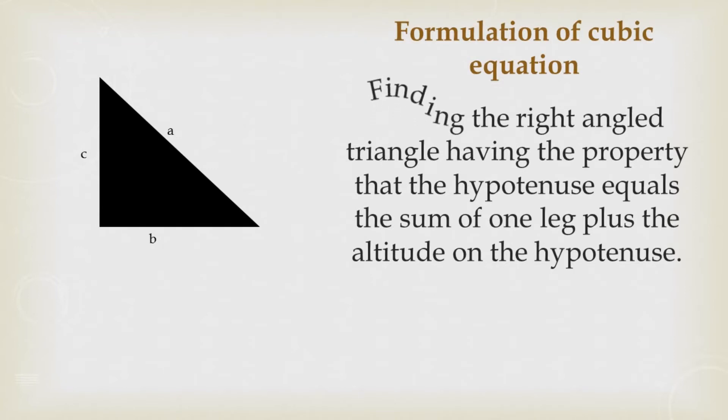If you are to find a right angle triangle that has this property, that the hypotenuse is equal to the sum of one leg, in this case it can be B, plus the altitude which is the height of the right angle triangle. When a right angle triangle has this property, A = B + C, this particular explanation was also conceived in solving the cubic equation by Omar Khayyam.